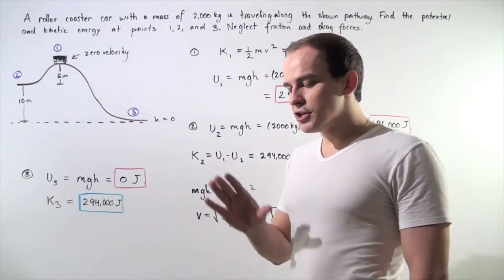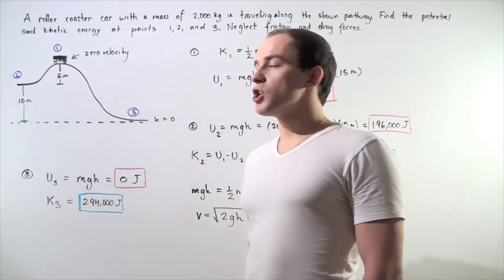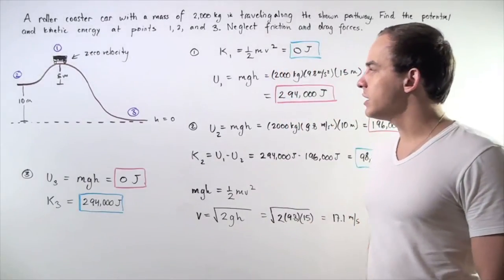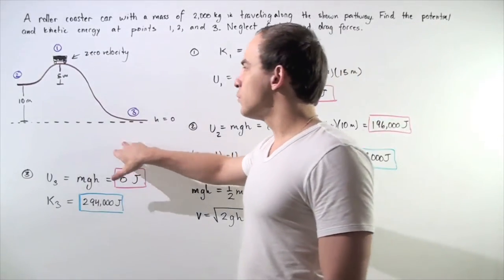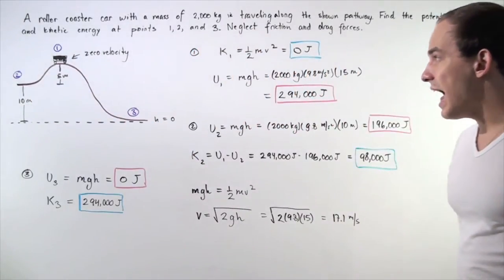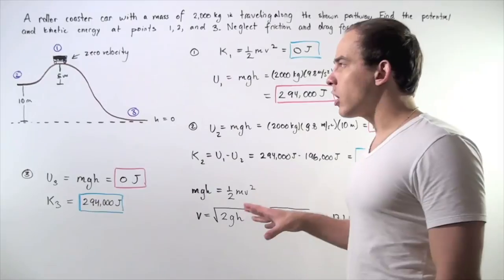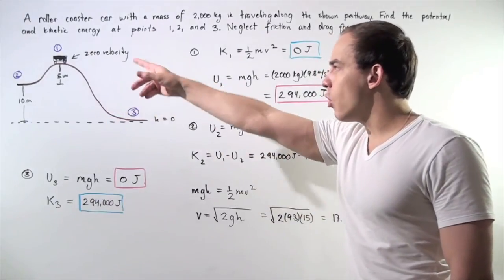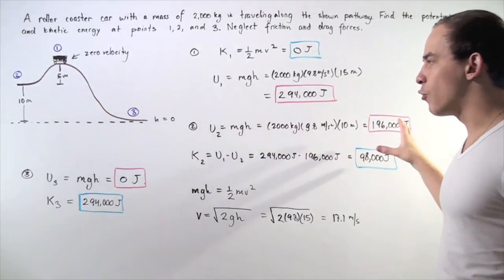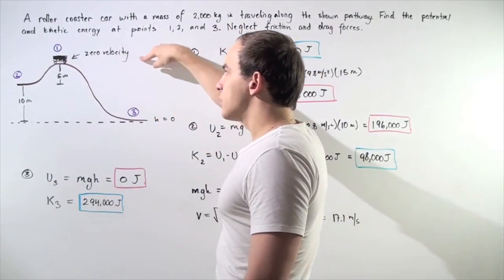Let's examine the gravitational potential and kinetic energy of a rollercoaster car. Suppose a rollercoaster car with a mass of 2,000 kilograms is traveling along the following pathway, from point 2 to point 1 to point 3. We want to calculate the gravitational potential energy and kinetic energy at points 2, 1, and 3. We'll begin by assuming no friction and drag forces.